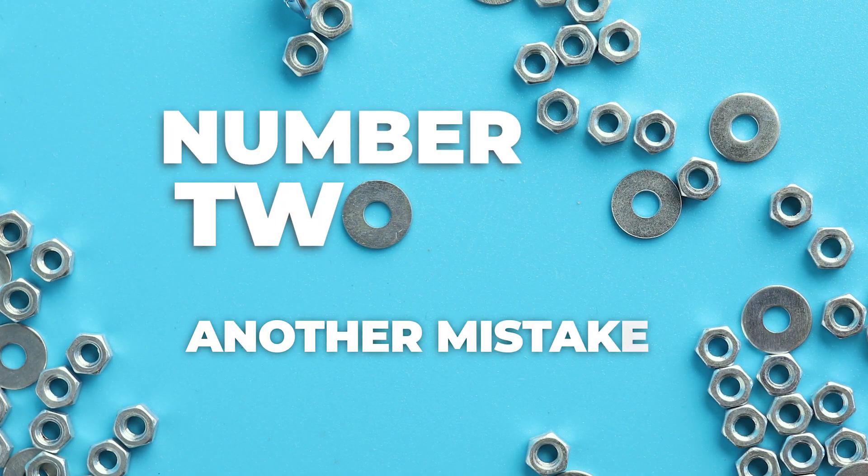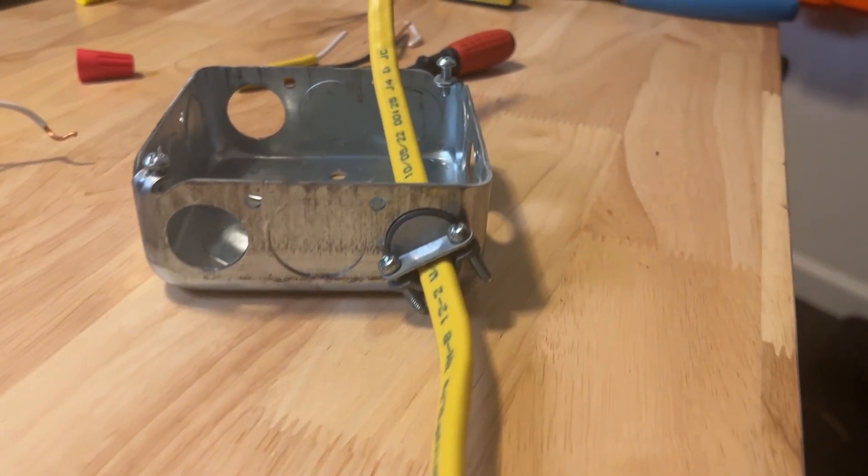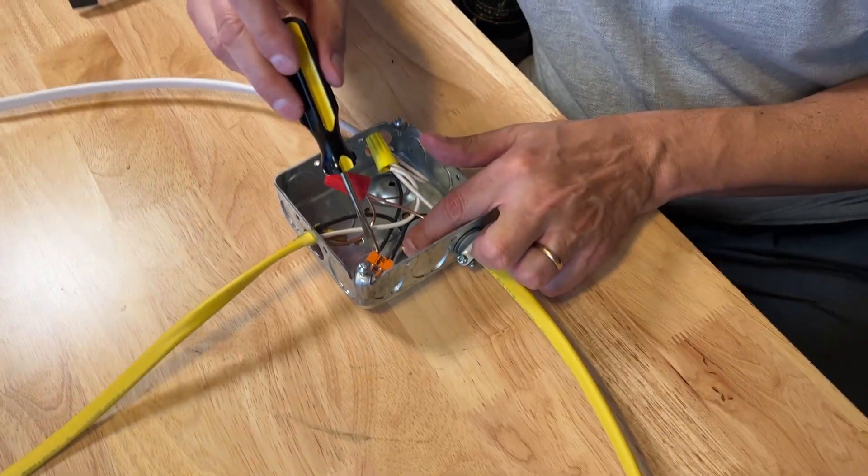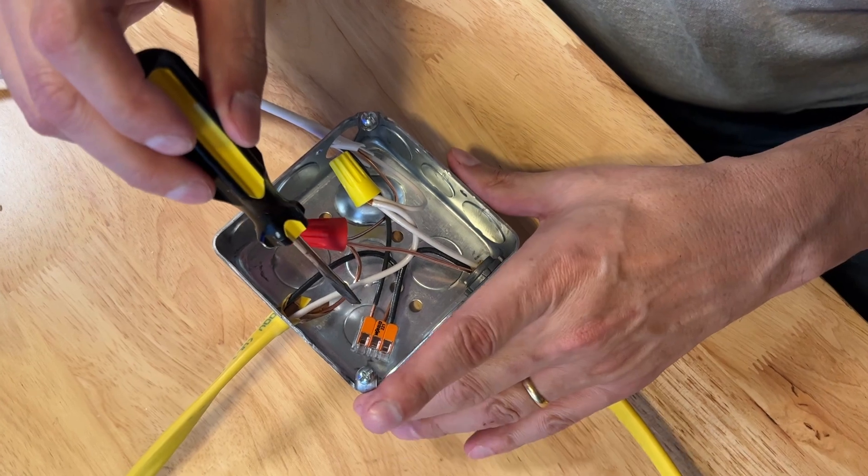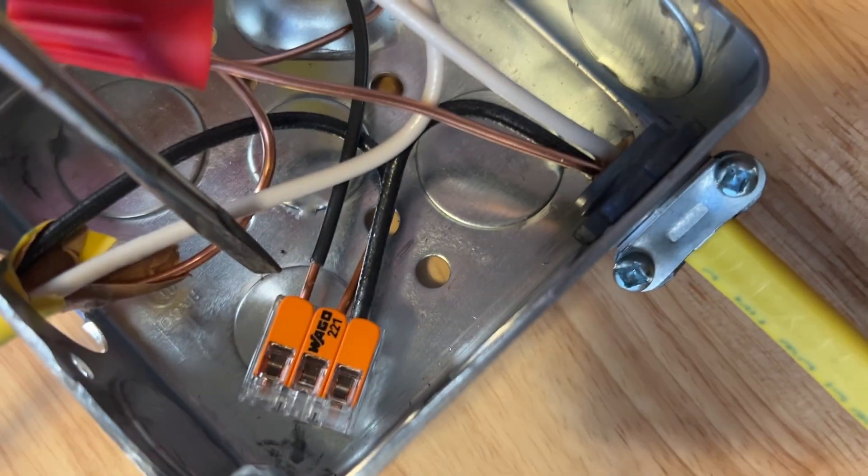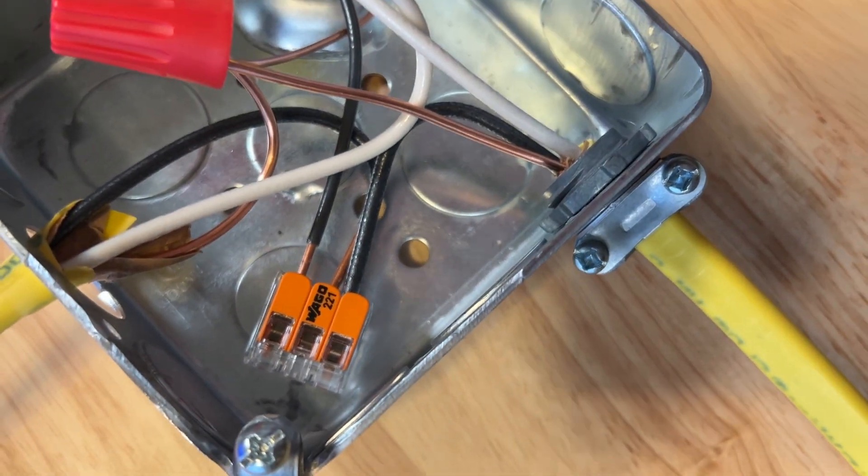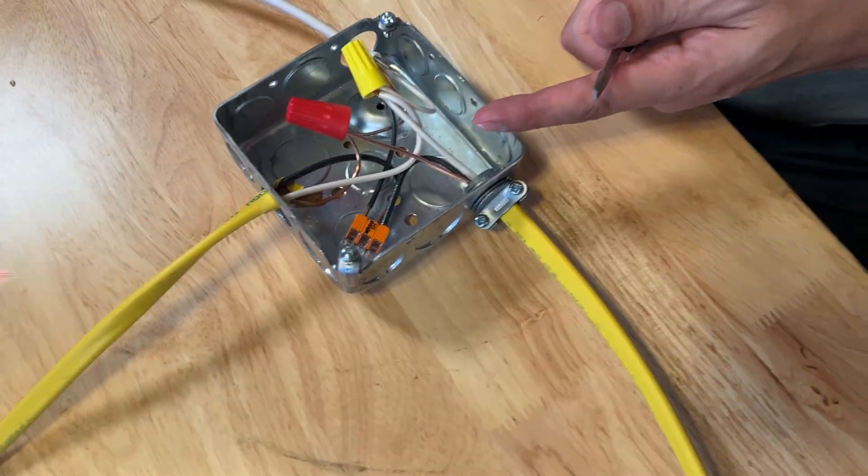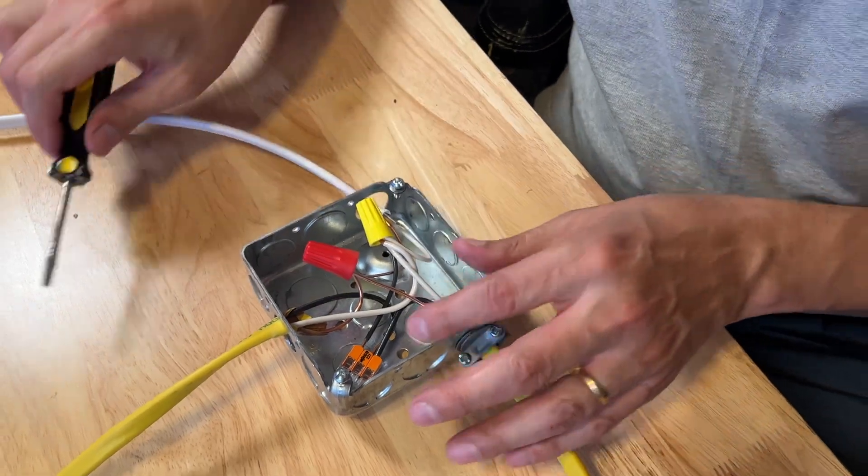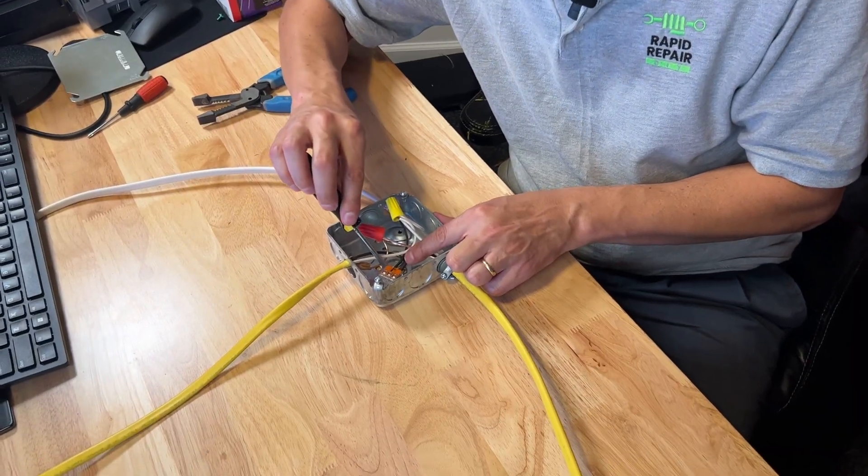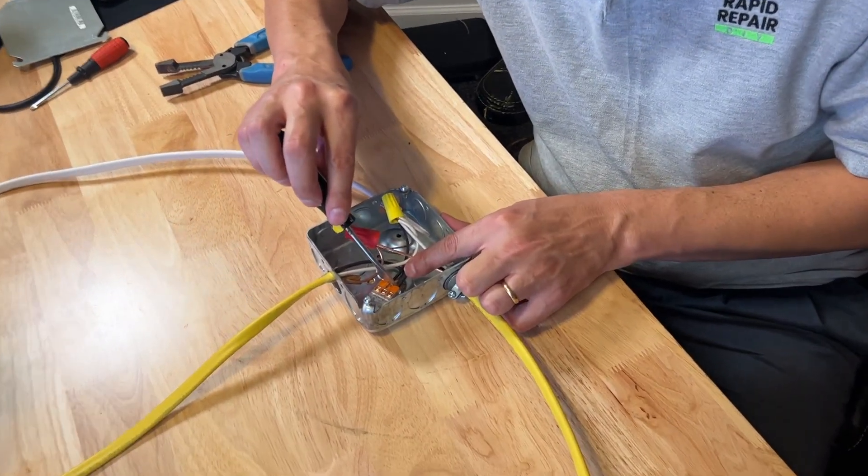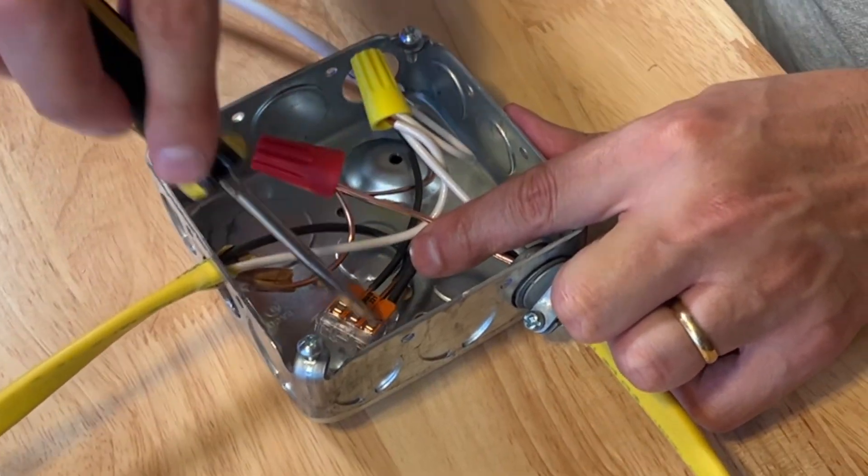Number two, the next most common mistake I see DIYers making is leaving the wires exposed. And if you look at this connector here, this is a snap on connector, I see exposed copper wires on the hot side of the electrical. So this is a metal box. So if anything touches that it will become energized, the entire box will become energized, the cover plate will become energized, it could arc, it could start a house fire, it could electrocute somebody. So all sorts of problems come with that. So when you're stripping your wires back, do not leave any exposed wire, you want the wire insulation all the way into your fastener of choice.